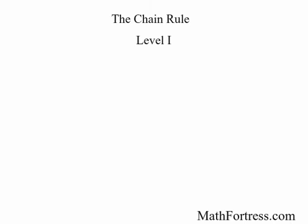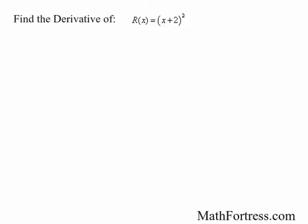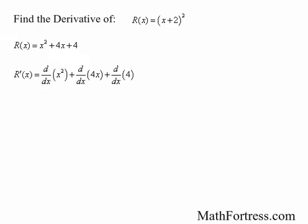The chain rule, level one. We're going to start by working on an example: find the derivative of r of x equals the quantity x plus 2 squared. You should know how to find a derivative of this function. First we need to expand the binomial, then we use the sum rule along with the power rule to find the derivative. Expanding the binomial and taking appropriate derivatives gives us: the derivative of r of x is equal to 2x plus 4.